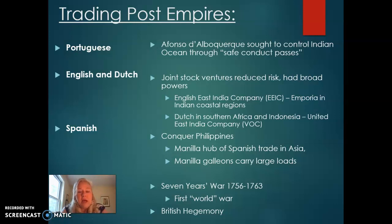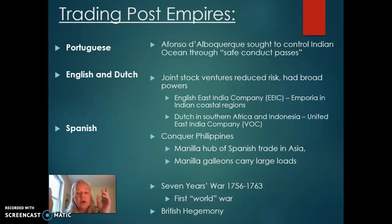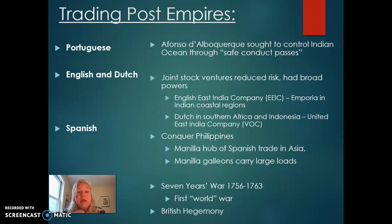During this time, trading post empires occurred all throughout Asia and India. A few notable ones: the Portuguese — Alfonso de Albuquerque sought to control the Indian Ocean through safe conduct passes. The Portuguese had several ships following the shipping lanes, and Albuquerque would stop ships and require a fee so that they would be safe — in other words, so they would not get taken over by the Portuguese.